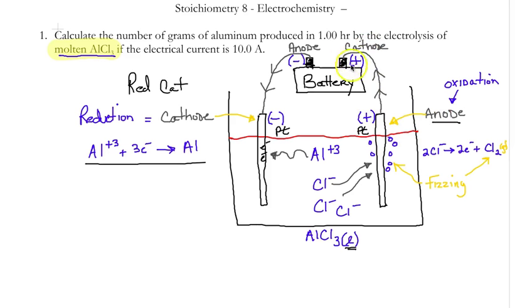Because the positive terminal, the battery or electrode is positive and connected to this metal, it makes it positive. These signs are always the same.